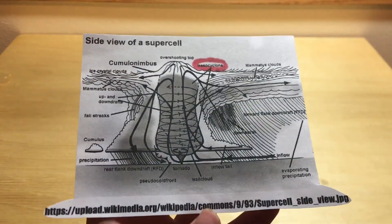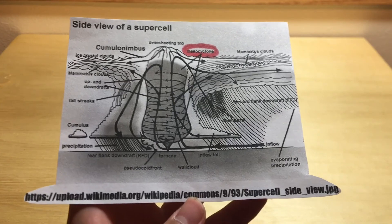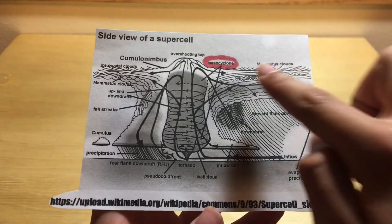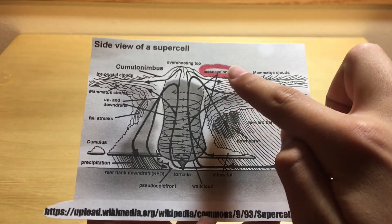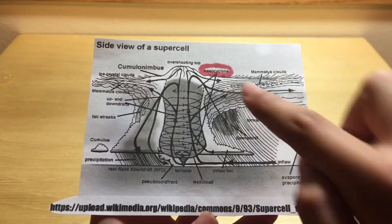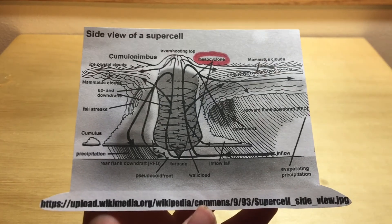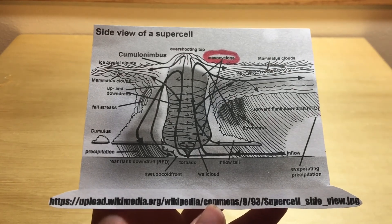Here is a diagram of a supercell thunderstorm. You can see, circled in red, here is the mesocyclone. Pause the video to see the diagram.